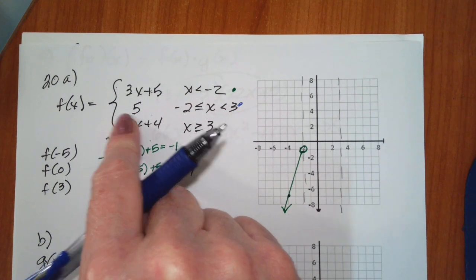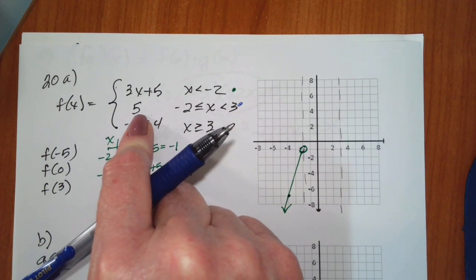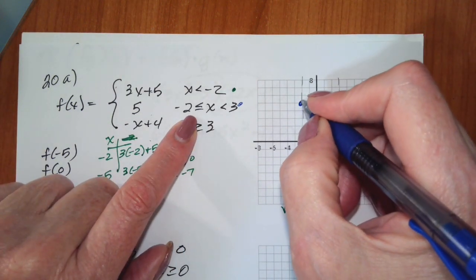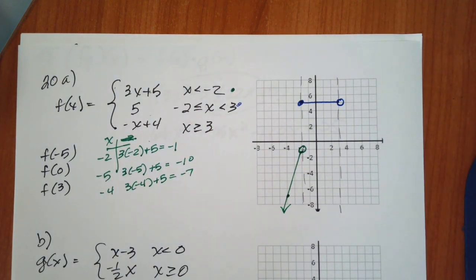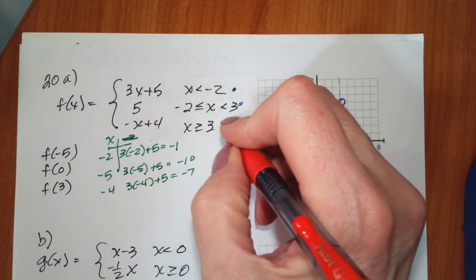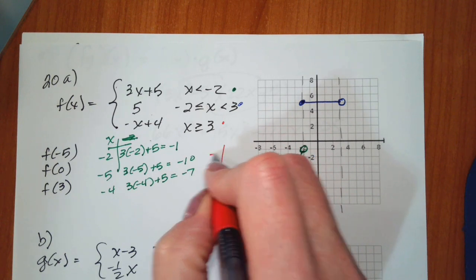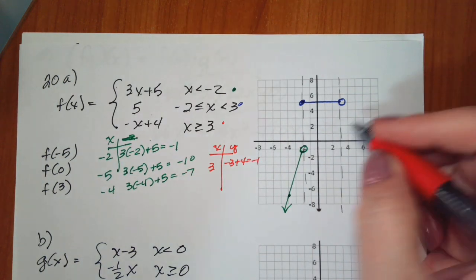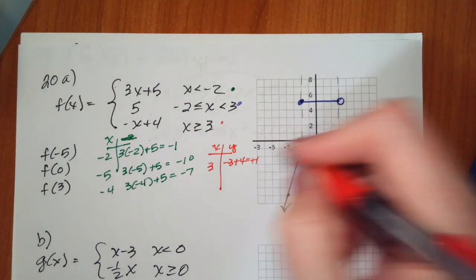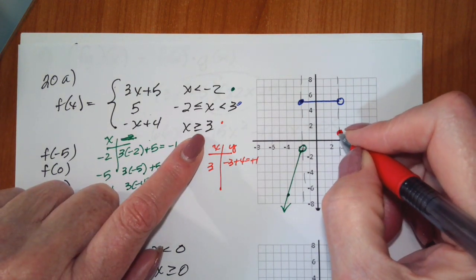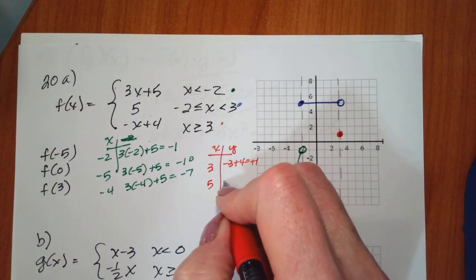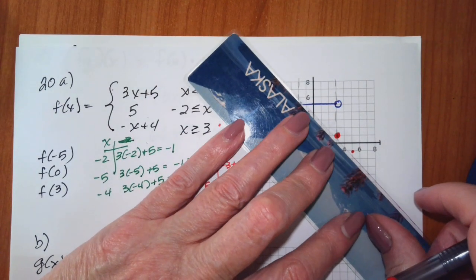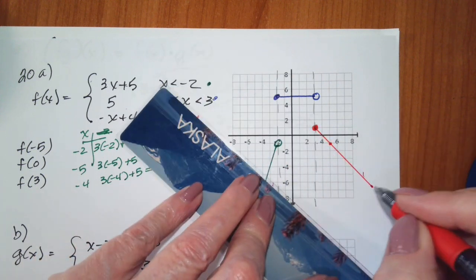In the middle, the function is equal to 5 — that's a horizontal line where y is 5. So a horizontal line at 5 between negative 2 and positive 3; it includes negative 2, so there's a solid circle there, and it's open at 3. Then for the piece negative x plus 4 where x is greater than or equal to 3: if x is 3, negative 3 plus 4 is positive 1, so I have the point 3, 1 — it includes it, so it is a solid circle. At x equals 5, negative 5 plus 4 is negative 1, so 5, negative 1, and it goes on to infinity.